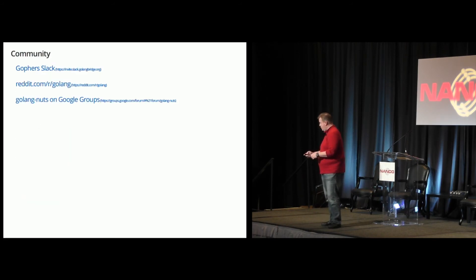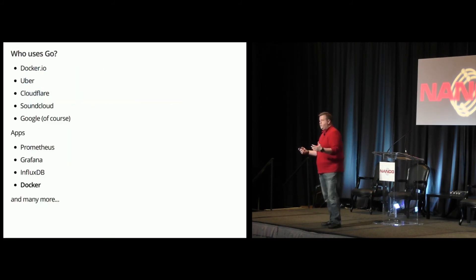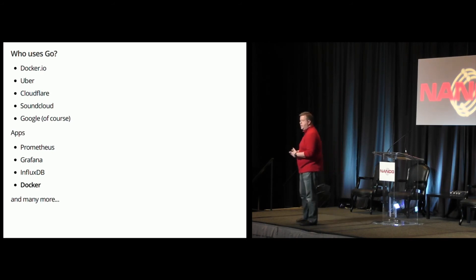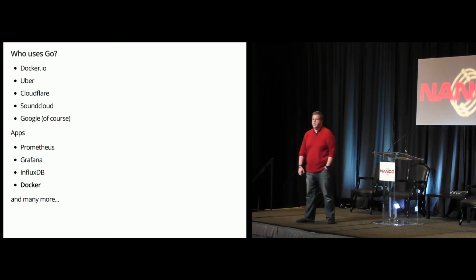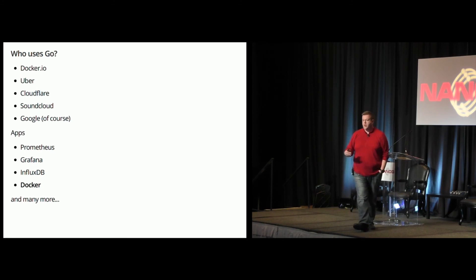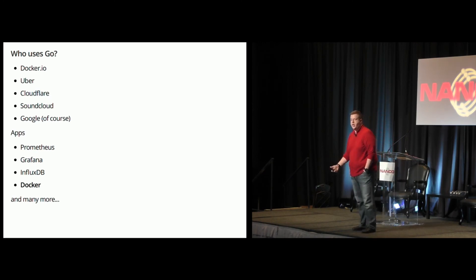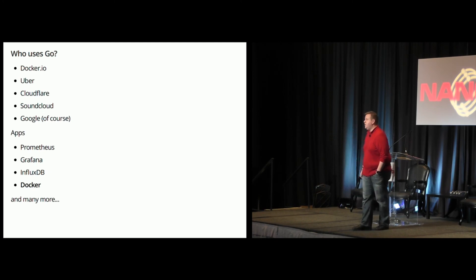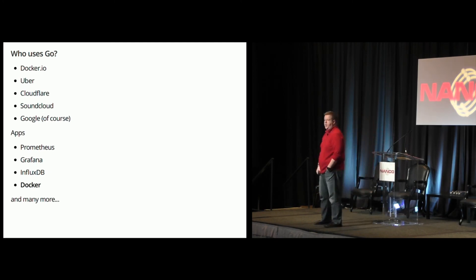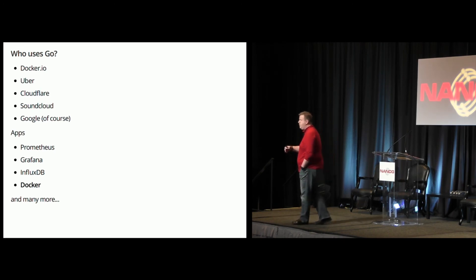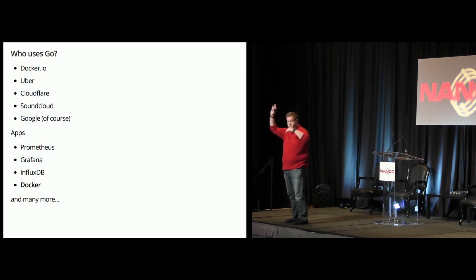So that's it. Who's using Go? Docker, Uber, Cloudflare, a lot of big companies, and of course Google themselves. Go was developed at Google and they definitely eat their own dog food. Some apps you may have heard of: Prometheus, which is a monitoring app; Grafana, which you can actually see out here by the coffee bar — Grafana is a dashboard app written in Go on the server side; InfluxDB, which is a data store; and of course Docker, which is entirely written in Go.